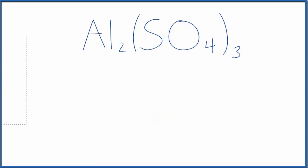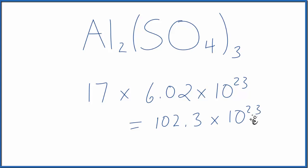Now if you were asked how many atoms are in 1 mole of aluminum sulfate, then you would get your 17 atoms, just like we did, and multiply that by Avogadro's number. And that would give you 102.3 times 10 to the 23rd atoms, or you could take it and have 1.023 times 10 to the 24th. Either way.